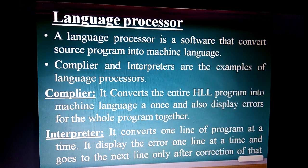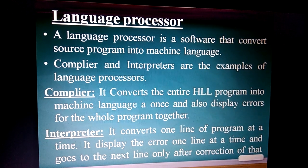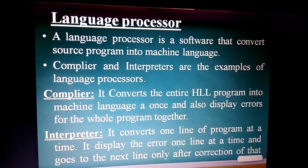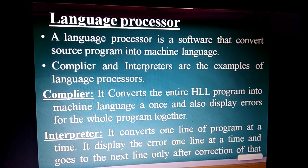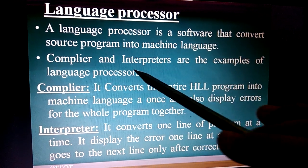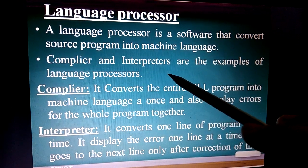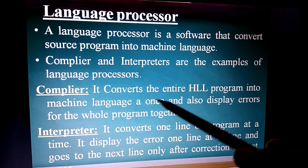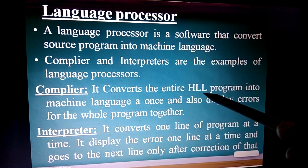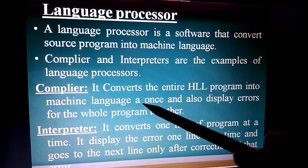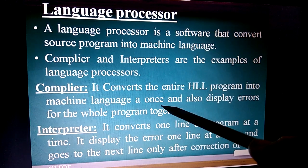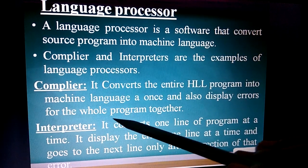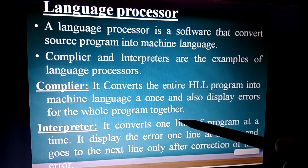Natural language is also used in artificial intelligence. The next topic is language processor. A language processor is software that converts a source program into machine language. There are two programs: compiler and interpreter. The compiler converts the entire high-level program into machine language at once and displays errors for the whole program together.